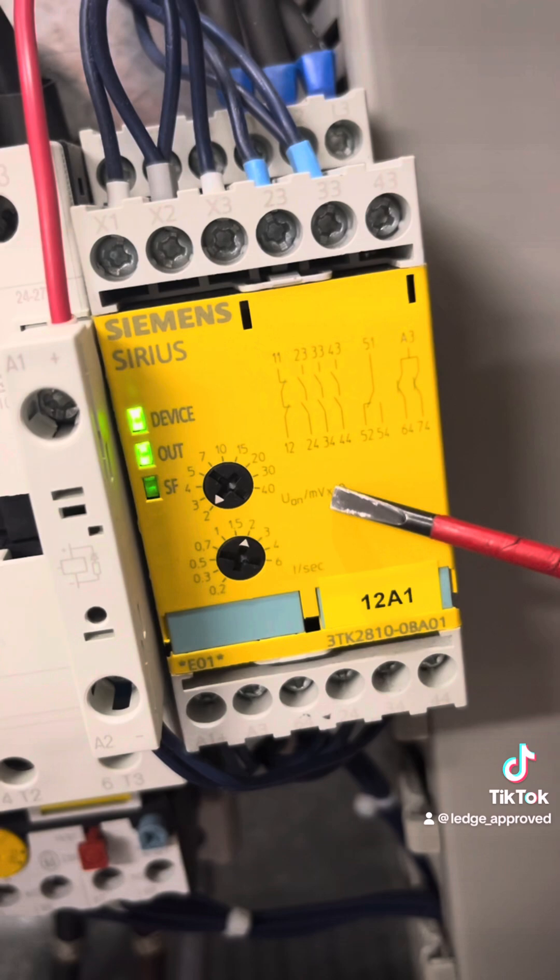Then we've got our two dials—one's the minimum voltage it's looking for, and then the time after the voltage drops off that it counts down to. To the right of that, it's showing you what number of terminals